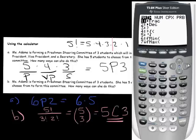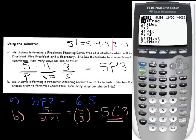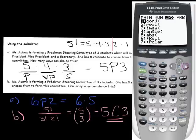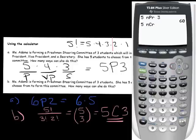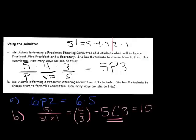Go back to the calculator, hit 5, go to Math, over to PRB, and down to 3 where it says NCR. Then hit your 3 and you get your answer of 10. So that's just how you can use your calculator.